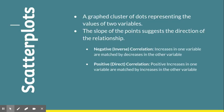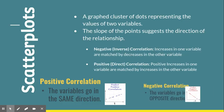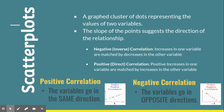The slope of the points suggests the direction of the relationship — whether it's a positive or direct relationship, or a negative inverse relationship. A positive correlation is when one variable increases at the same rate as the other, so they both increase or decrease in the same direction. A negative or inverse correlation is the opposite: as one variable increases, the other decreases.